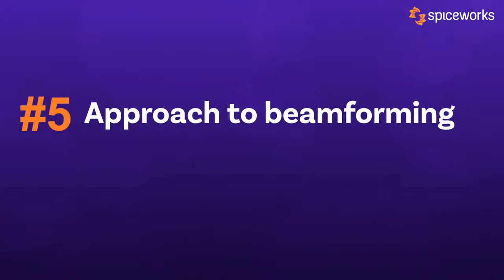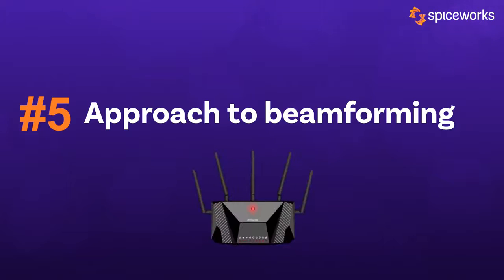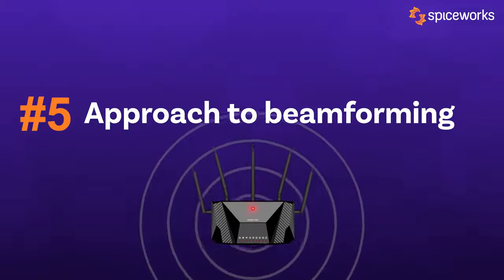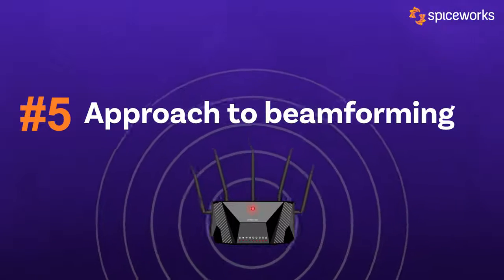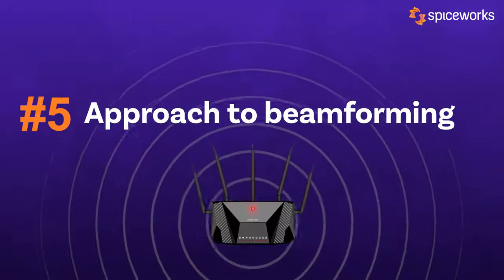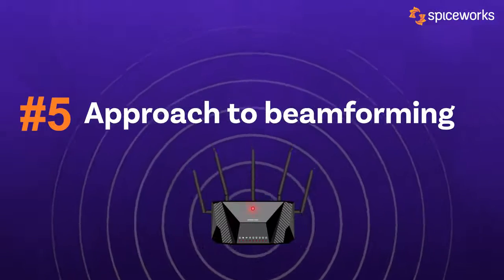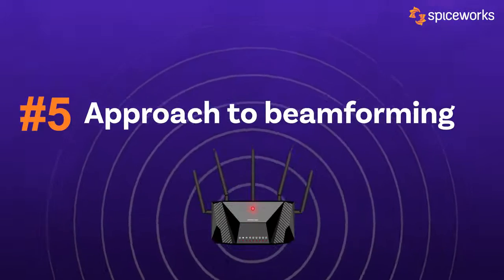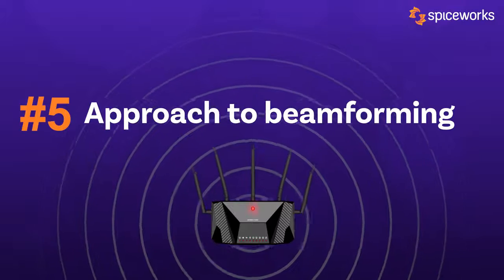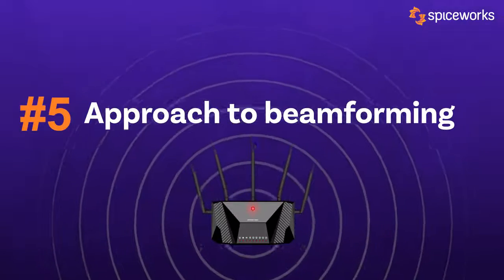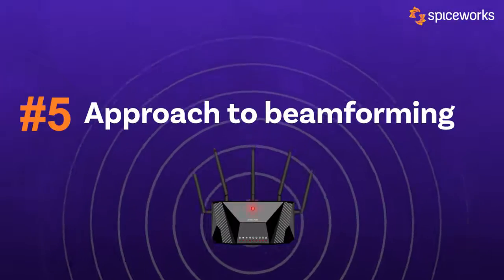Fifth, approach to beamforming. Beamforming is a signal transmission technique that directs wireless signals towards a specific receiver rather than spreading the signal from different directions. With beamforming, an access point can send data directly to a device rather than broadcasting the signal in all directions. In Wi-Fi 5, just 4 antennas were used. However, Wi-Fi 6 uses 8 antennas. The better the ability of the Wi-Fi router to use beamforming technology, the better the data rate and range of the signal.